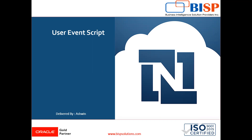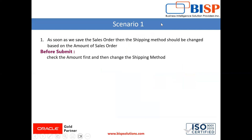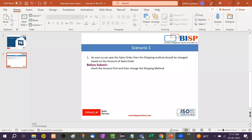For example, if a company or the client wants that as soon as the sales order is created, based on the amount, the shipping method should be changed. We will use a 'before submit' user event script, and as soon as we save the sales order, the shipping method should change based on the amount. Let me show you with an example.